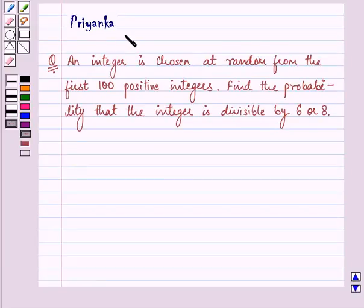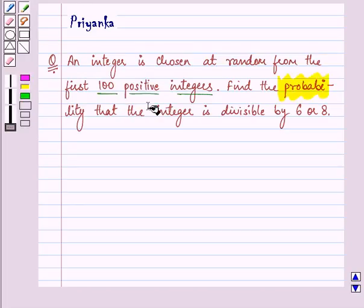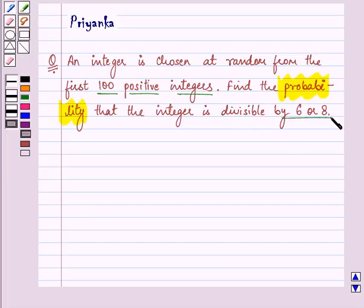Hi and how are you all today? My name is Priyanka and let us discuss the following question. It says an integer is chosen at random from the first 100 positive integers. Find the probability that the integer is divisible by 6 or 8.